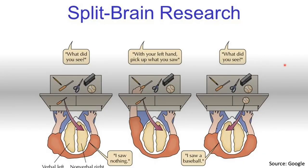Here's an example of split brain in action. We have a patient and we ask them to look at a line in front of them. If we put a baseball image on the right side and ask what they saw — remember the left brain controls speech and the brain is contralateral — the patient is going to say 'I saw a baseball,' because the left side is processing that information and speech is controlled by the left side.